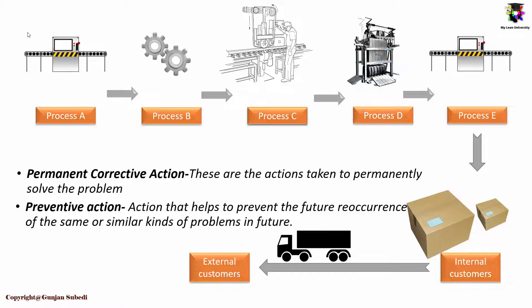There are various kinds of corrective actions. One is containment — that is, immediate corrective actions — which we immediately do as the problem is identified. We have already discussed about this. There is also permanent corrective actions. These are the actions taken to permanently solve the problem, and they are followed once we do the immediate corrective actions.